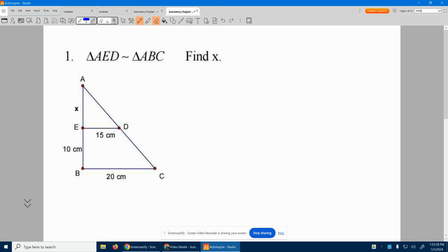Problem one. So it says that triangle AED is similar to triangle ABC. So we have the small triangle and the big triangle. They're similar. So we need to set up a proportion, get the corresponding sides.